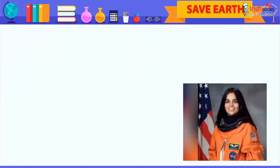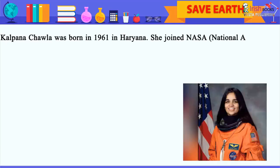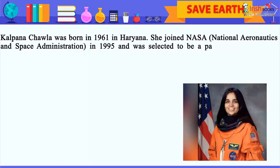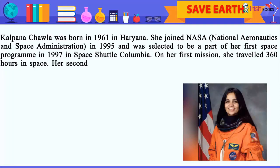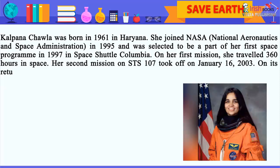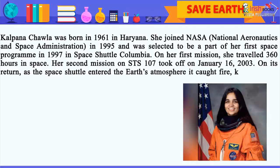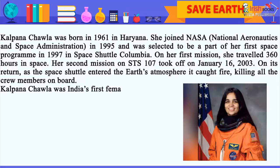Kalpana Chawla was born in 1961 in Haryana. She joined NASA (National Aeronautics and Space Administration) in 1995 and was selected to be part of her first space program in 1997 on Space Shuttle Columbia. On her first mission, she traveled 360 hours in space. Her second mission on STS-107 took off on January 16, 2003. On its return, as the Space Shuttle entered the Earth's atmosphere, it caught fire, killing all the crew members on board.